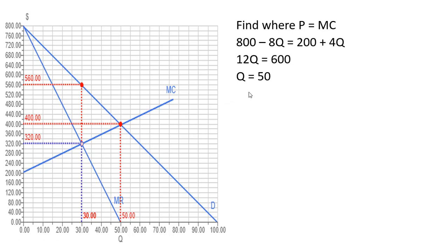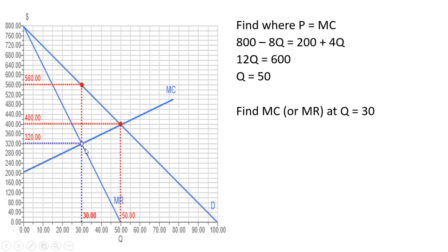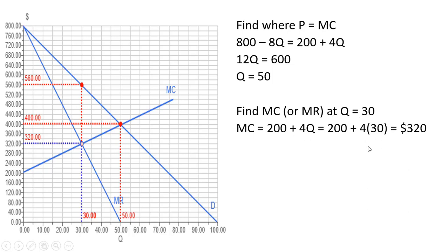We need one other piece of information: the value of marginal cost at q equals 30, the profit-maximizing output level. Taking 30 units and plugging into the marginal cost equation — 200 plus 4q — marginal cost at q equals 30 is $320.